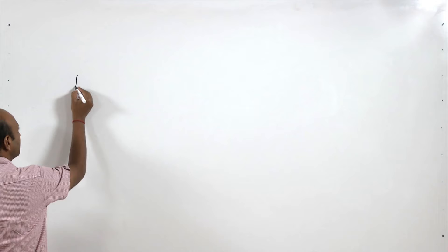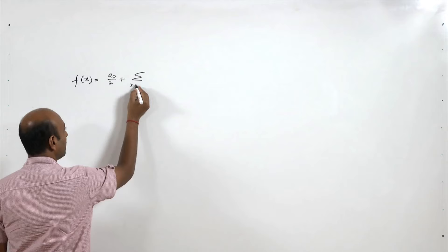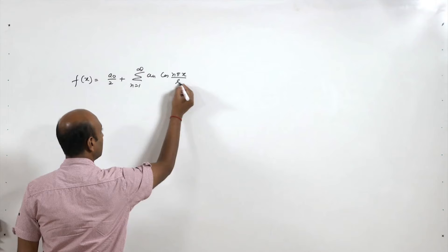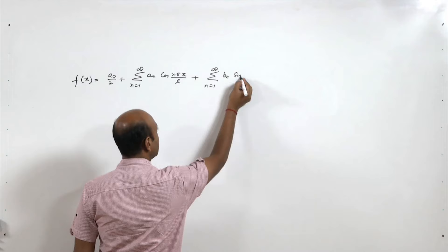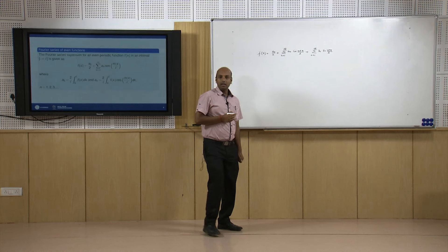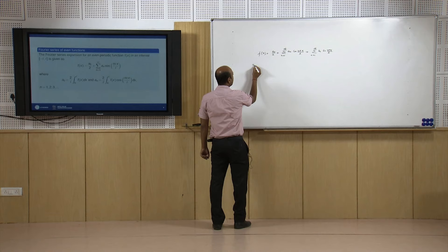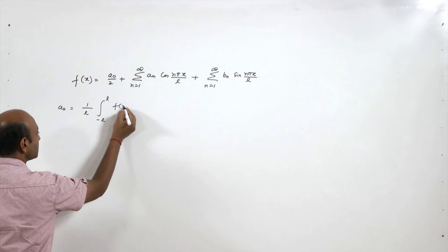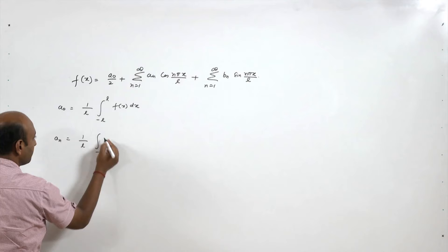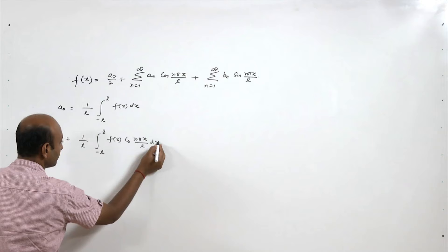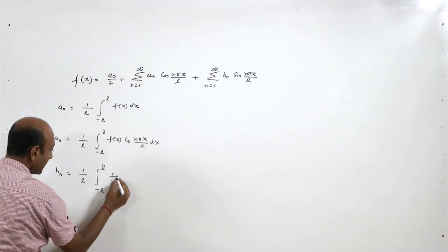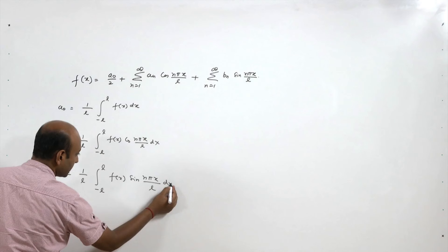Now, the Fourier series representation of any f(x) on the interval -l to +l with period 2l is: a₀/2 plus the summation from n=1 to infinity of [aₙ cos(nπx/l) + bₙ sin(nπx/l)], where a₀ = (1/l) ∫₋ₗˡ f(x) dx, aₙ = (1/l) ∫₋ₗˡ f(x) cos(nπx/l) dx, and bₙ = (1/l) ∫₋ₗˡ f(x) sin(nπx/l) dx.